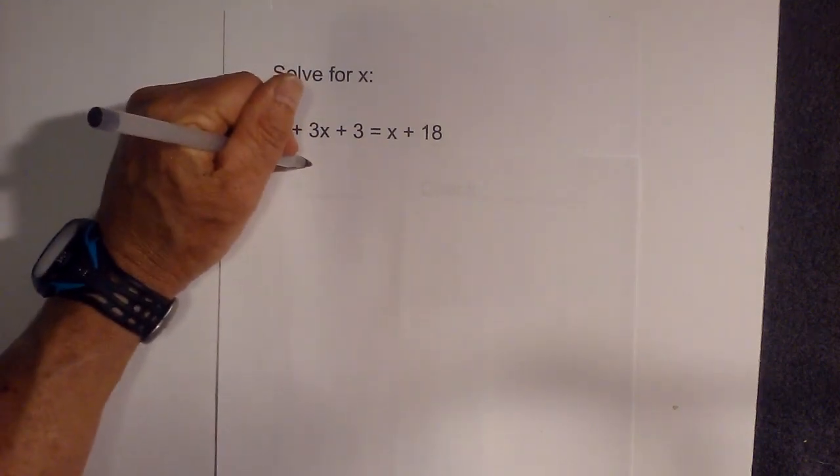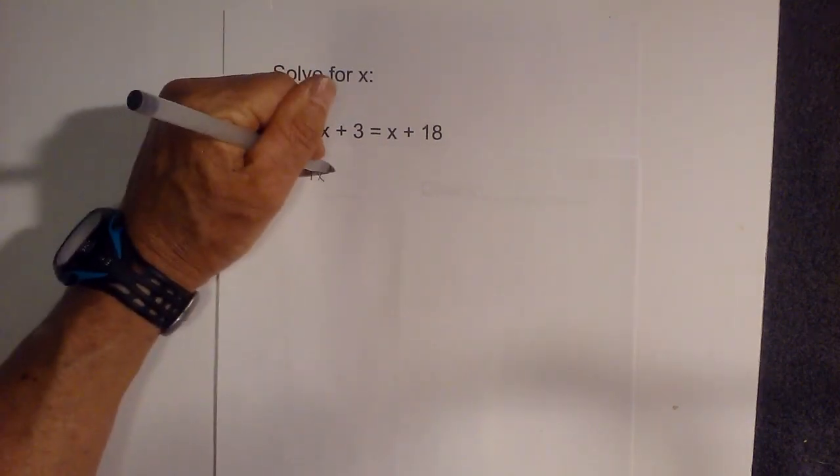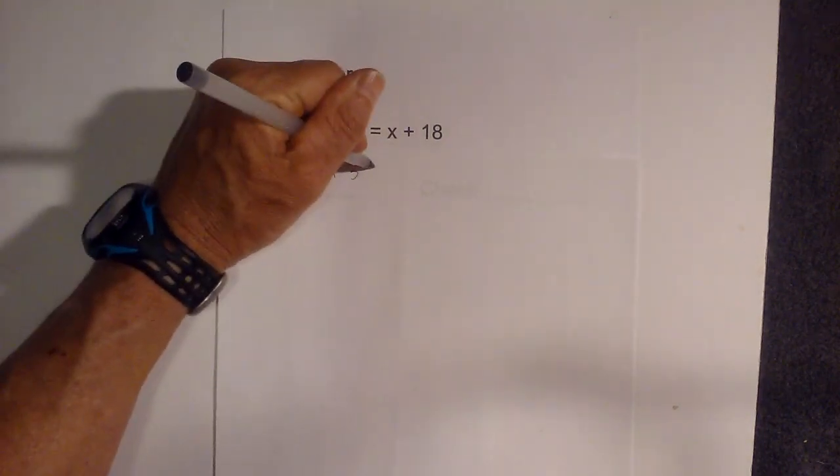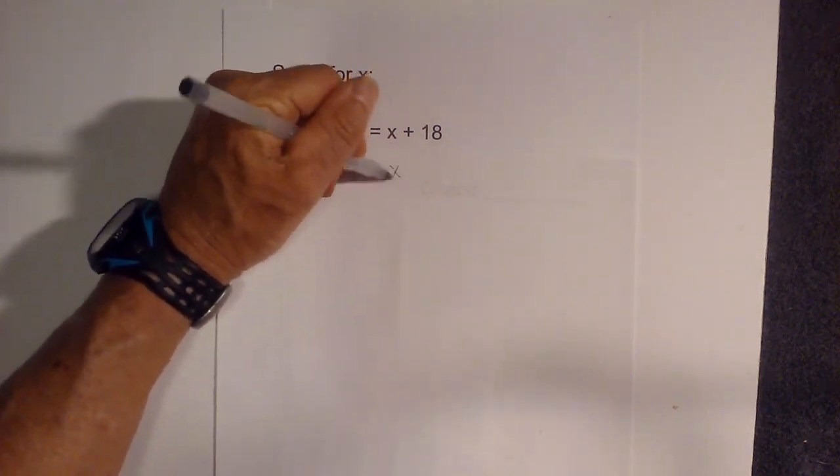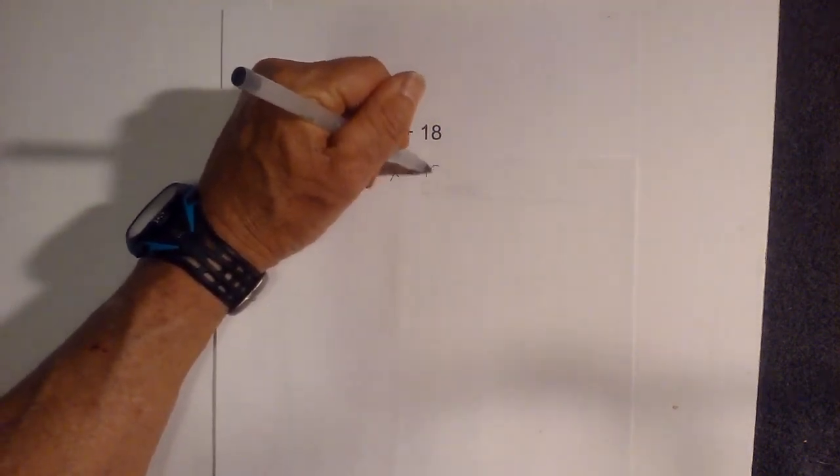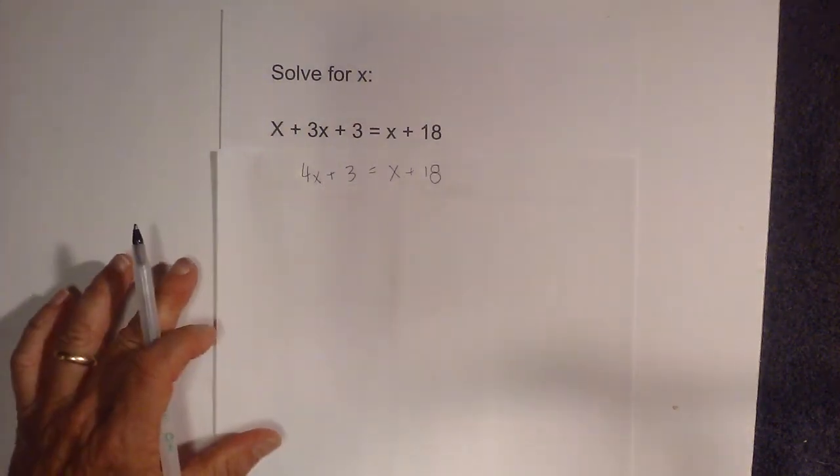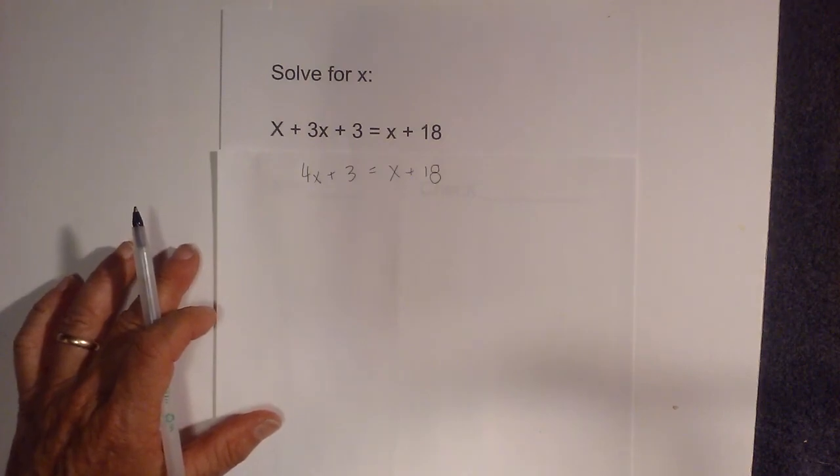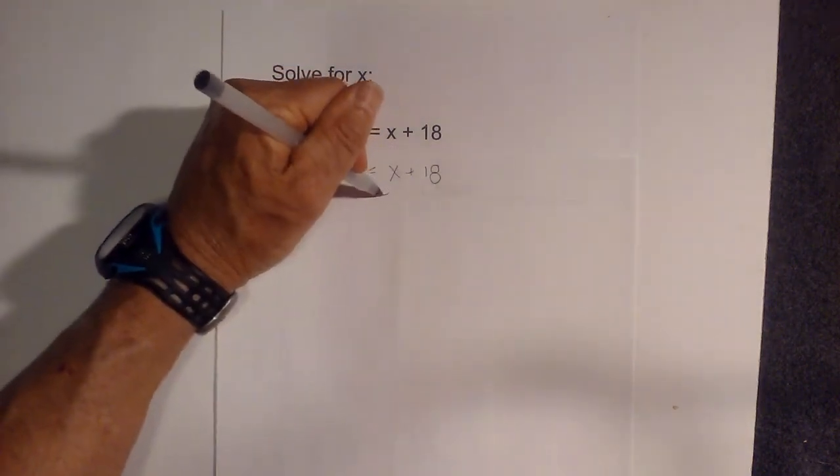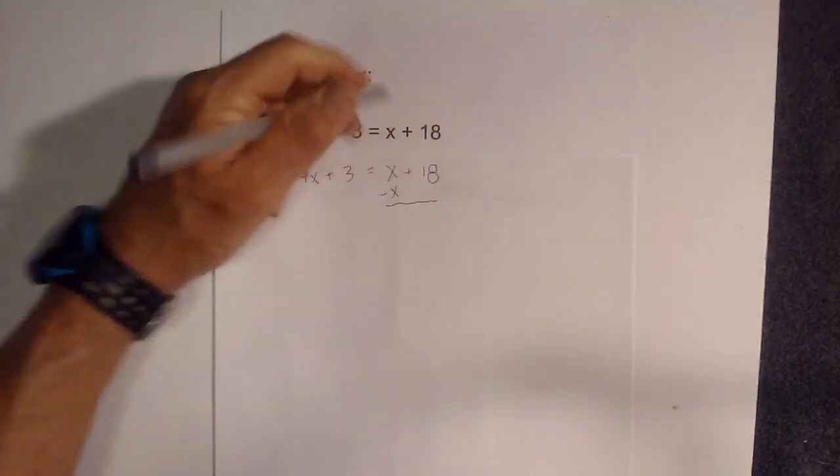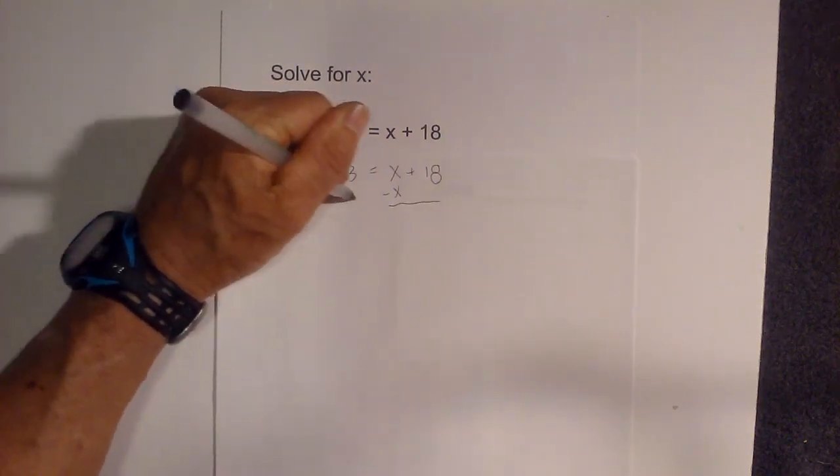X plus 3x is 4x plus 3 equals x plus 18. If you remember, that's the same thing as we had in our physical setup. Now I can remove x from each side. So I'm going to subtract an x from this side and an x from this side.